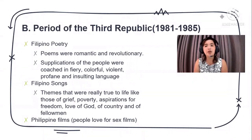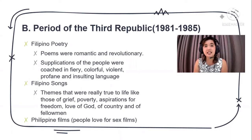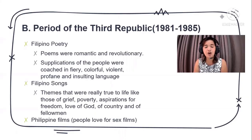The period of the third republic was between 1981 and 1985. This era featured Filipino poetry, Filipino songs, and Filipino films. There were many sexy stars during this time, as Filipinos had a love for sex films. Filipino songs covered different themes including grief, poverty, aspirations for freedom, and love of God.